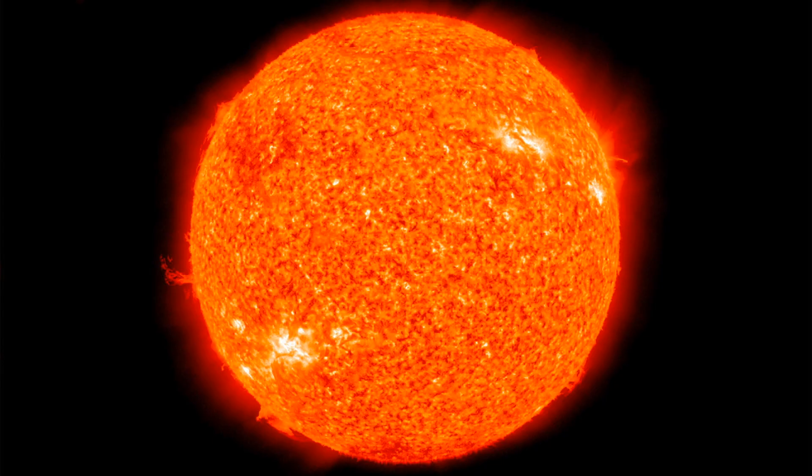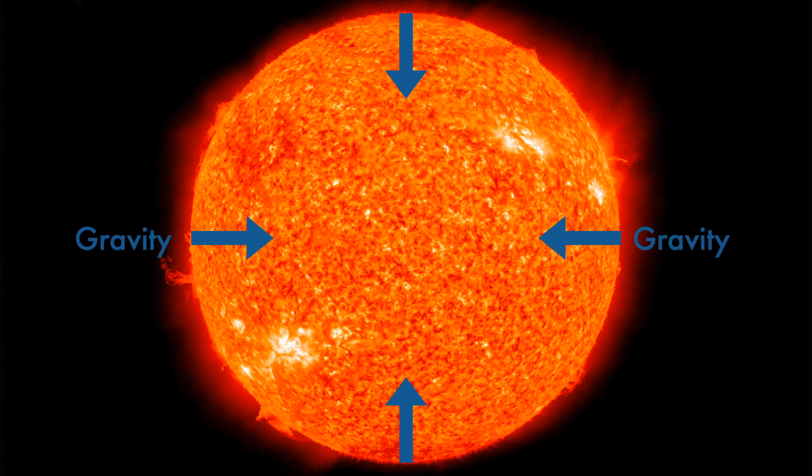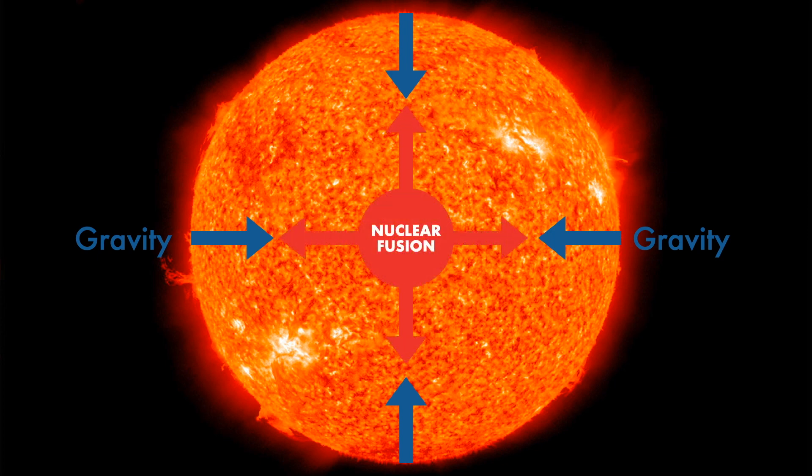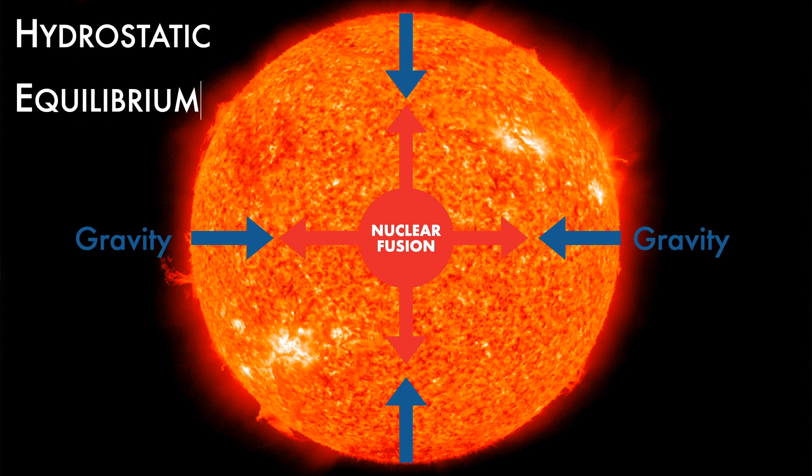Stars maintain a delicate balance between opposing forces. On the one hand, the pull of gravity, and on the other hand, the energy produced from nuclear fusion. The force of gravity pulls the star's matter towards its core. The heat and pressure that result from this gravitational pull power the process of nuclear fusion in the star's center. Nuclear fusion, in turn, produces a force that pushes the star back outward and counteracts the inward pull of gravity. A star is said to have achieved hydrostatic equilibrium when these forces are balanced.